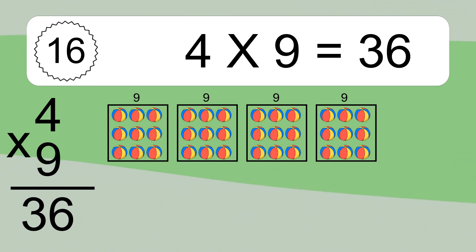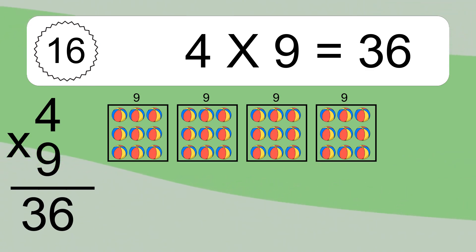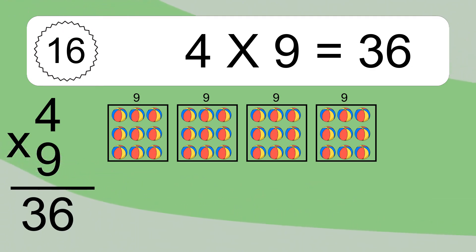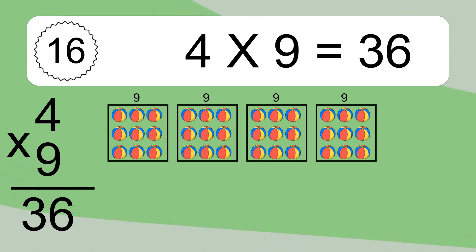We have 4 boxes, and each box has 9 colorful balls inside. If you count all the balls in all the boxes together, you will have 4 times 9 balls.